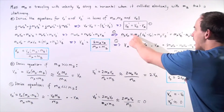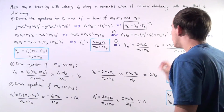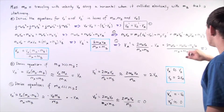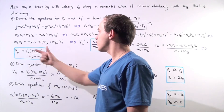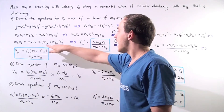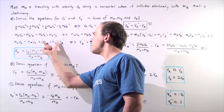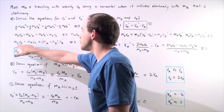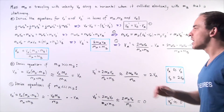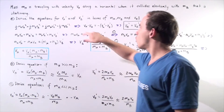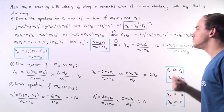Taking VA prime from equation one and plugging it into the momentum equation gives: MA times VA equals MA multiplied by the quantity VB prime minus VA, plus MB times VB prime. Expanding and rearranging, MA VA plus MA VA gives two MA VA on one side, and MA plus MB multiplied by VB prime on the other. Solving, VB prime equals two times MA times VA divided by MA plus MB.